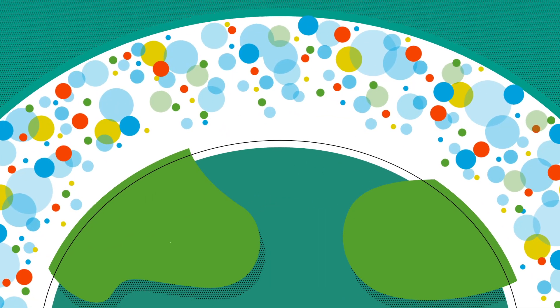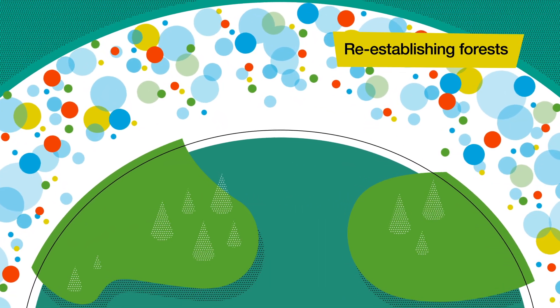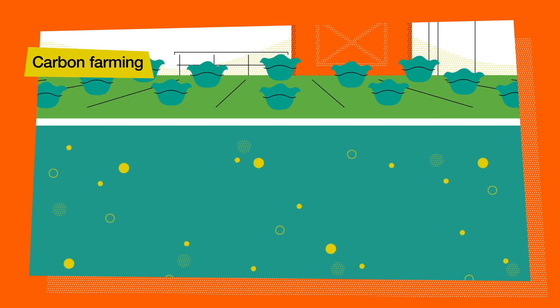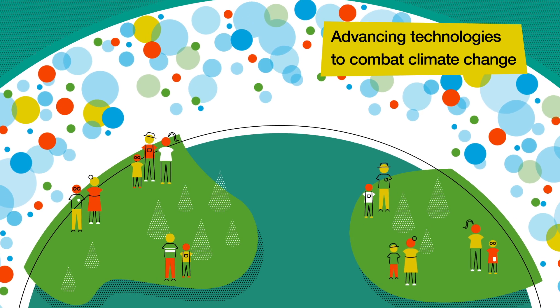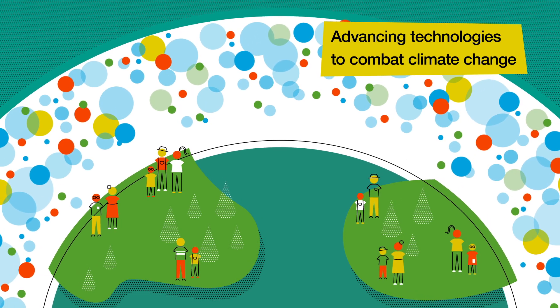Combined with lower-tech approaches like reestablishing forests and farming that allows more carbon dioxide to be stored in soil, advancing technologies to capture and store this powerful greenhouse gas is one way science can help combat climate change.